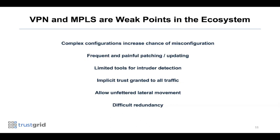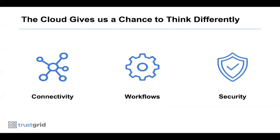This trust-based model grants lateral movement capabilities and the ability to hop from one system or application to another. These problems are largely attributed to VPN and MPLS technology being decades old with only modest incremental improvements. But the cloud really gives us a chance to think differently — whether public or private cloud, those architectures allow us to rethink the way we connect. To talk more about this, I'll hand it over to Joe.